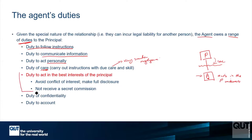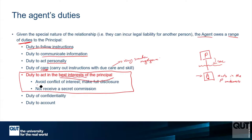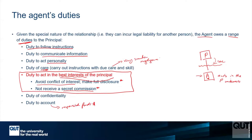This is the critical duty we concentrate on in this subject, and we'll come back to it when we look at duties of directors. You have to act in the best interests of the principal — not only can you not rip them off, you've got to act in their best interests. That means avoiding a conflict of interest and not receiving a secret commission. You also have a duty not to disclose confidential information, and a duty to account for funds or money that comes into your possession as part of the role.